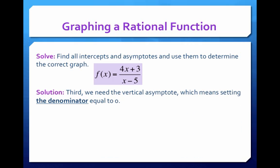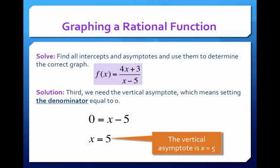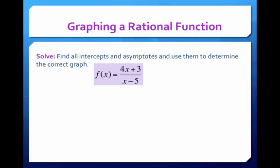So how do we find the vertical asymptote? Well, that's when we set the denominator equal to 0. So now we take x minus 5, the denominator, set it equal to 0, and we get x equals 5. And so at 5, on our x-axis, we're going to have a vertical asymptote. So our function will not touch the vertical line x equals 5.